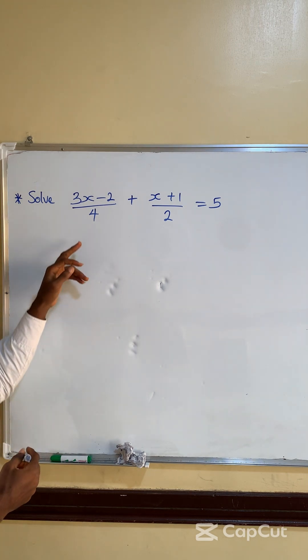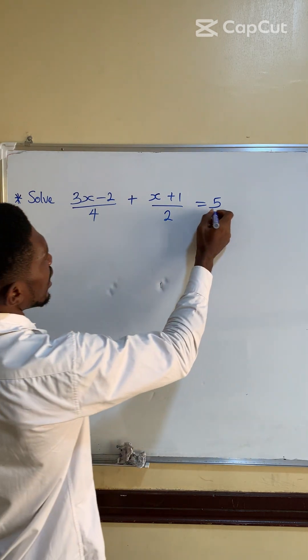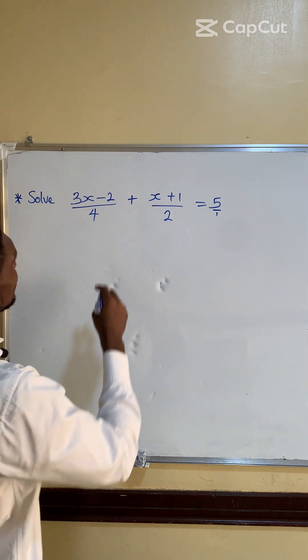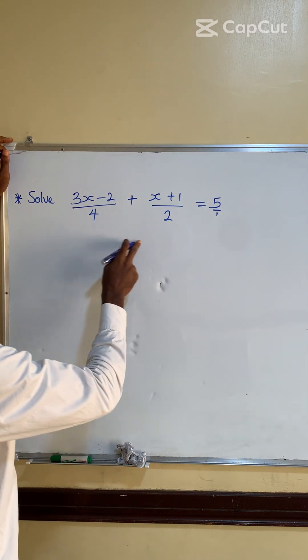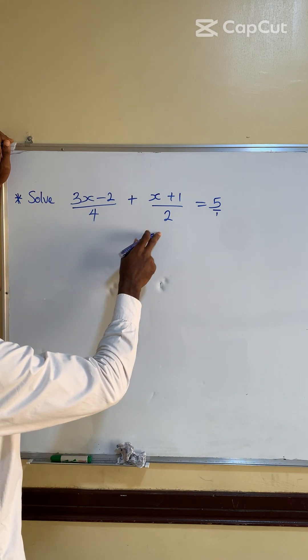If we want to solve this, we'll look for the LCM of 4 and 2. And of course, we hope we know that this is the same thing as 5 over 1. So we'll look for the LCM of 4 and 2 and use it to solve. Of course, you know that LCM of 4 and 2 is what?